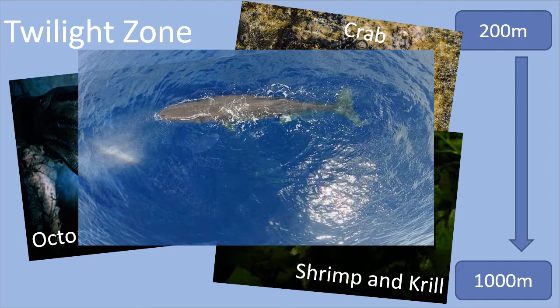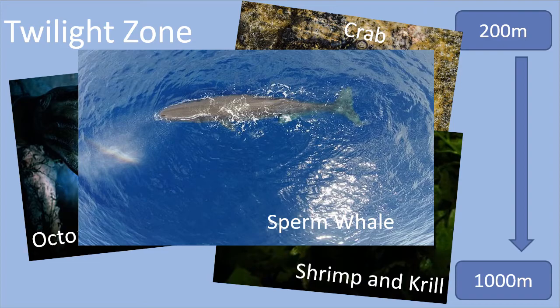Some animals, like the sperm whale, can come down to the twilight zone looking for tasty food, but they will need to go back up to the sunlight zone so they can breathe.